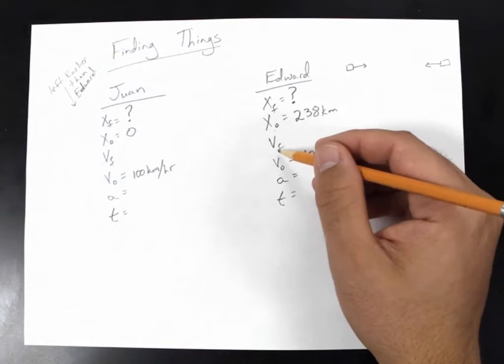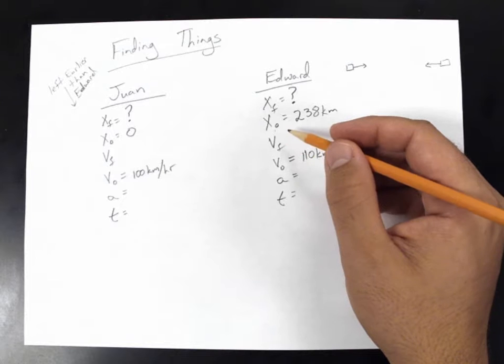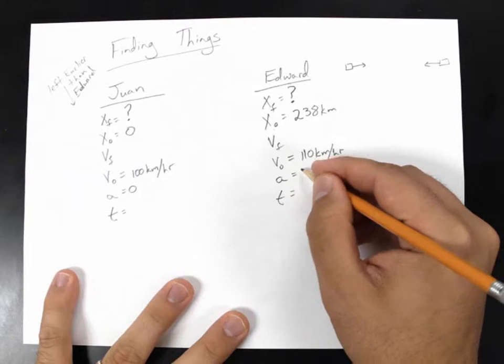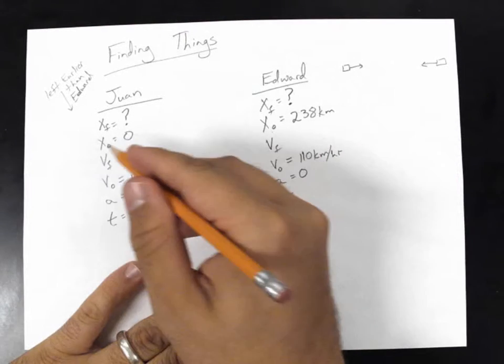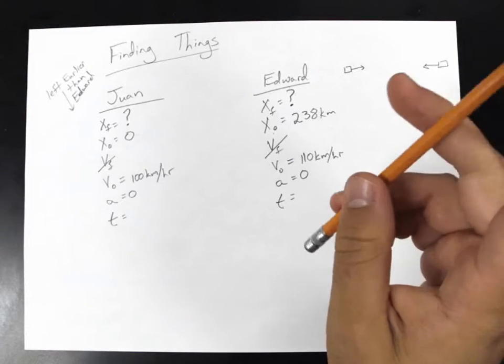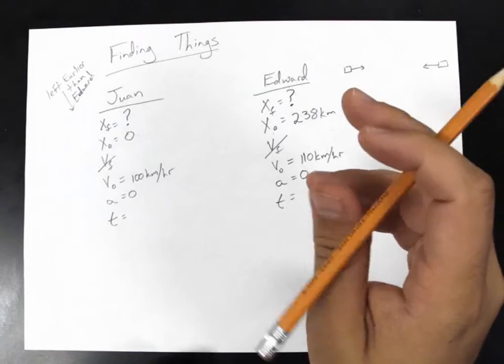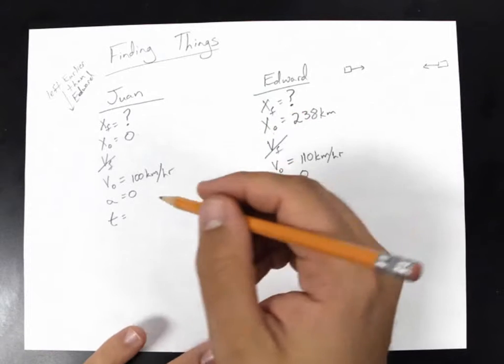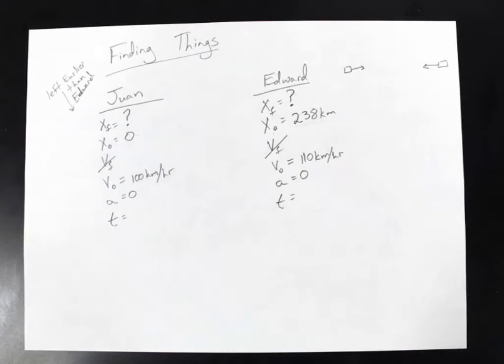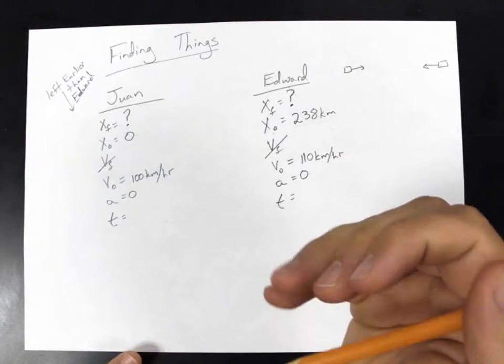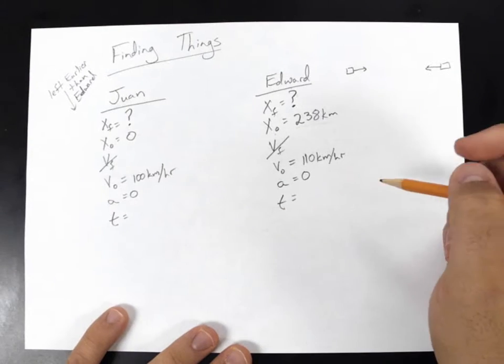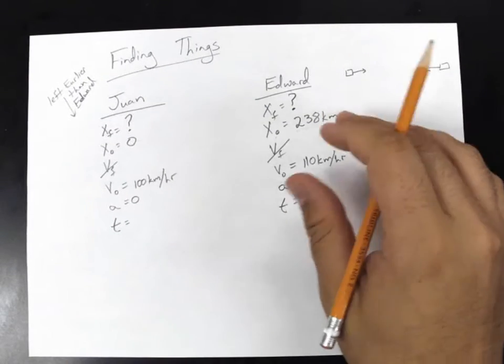Now, Richmond is 238 kilometers away, or so it says in the problem. So 238 kilometers is where Edward begins, his X initial. Now, V final for both. Now, here's the thing. We never talked about acceleration in this problem. Therefore, we must assume that the acceleration is zero, because what kind of a problem would this be if you did not know the acceleration or expected to infer it somehow? That's illegal. They're not falling, so there's no acceleration due to gravity.